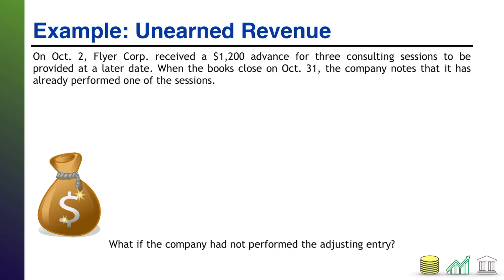If we think about the entry recorded on October 2nd: we received a cash advance, so debit cash for $1,200. And we owe someone three services — those services are worth $1,200. Credit unearned revenue for $1,200.